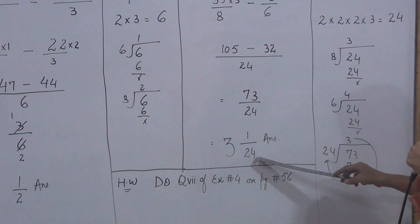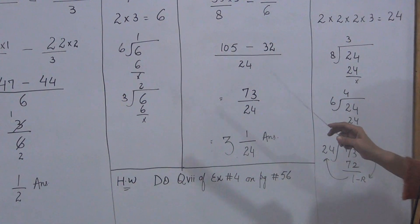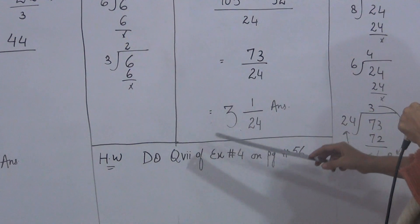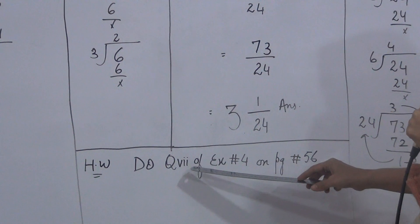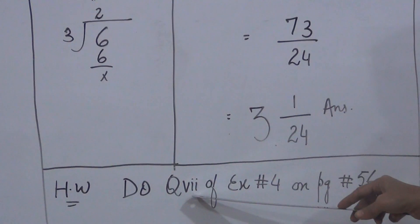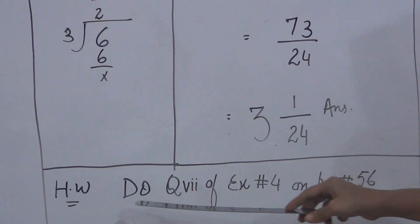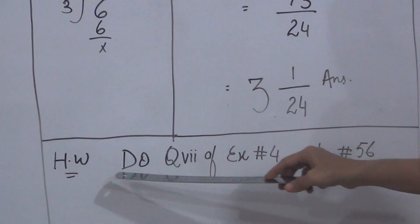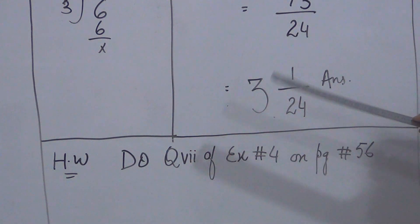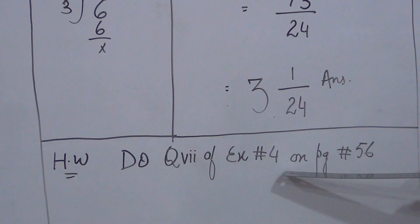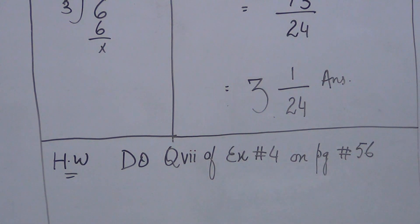Now you have to solve these three questions in your copy. Additionally, question number 7 is given as homework for this exercise. First complete the three questions in your copy, then do question number 7. Thank you.